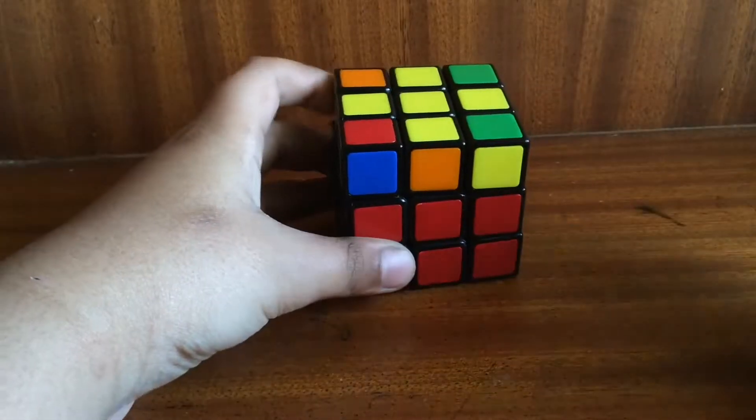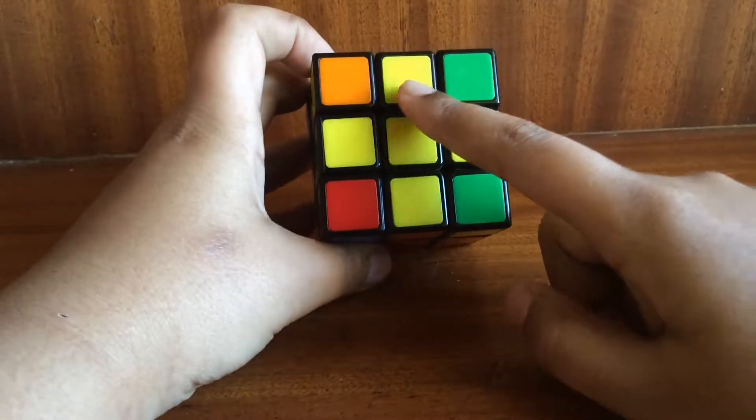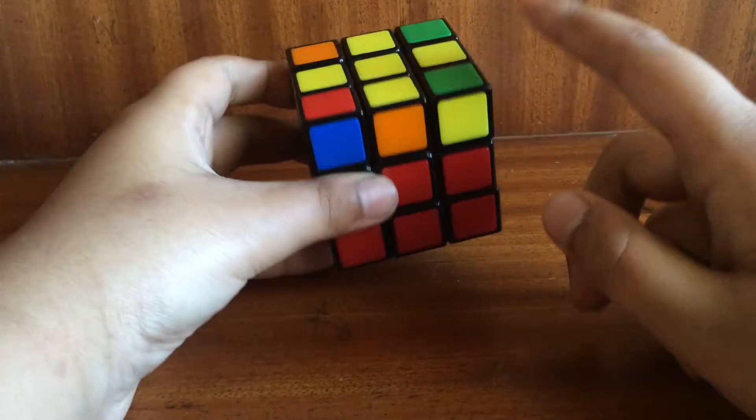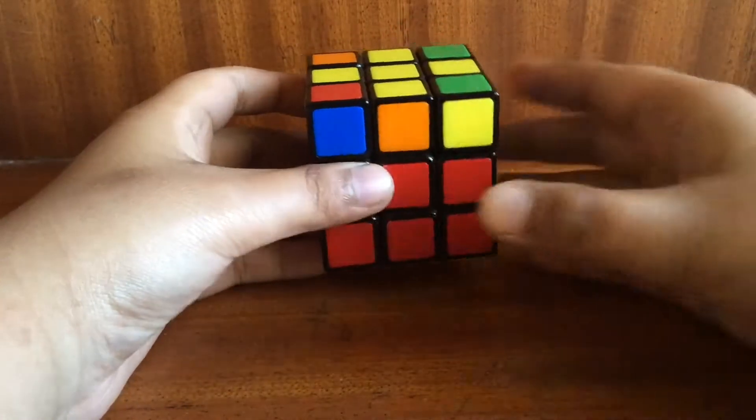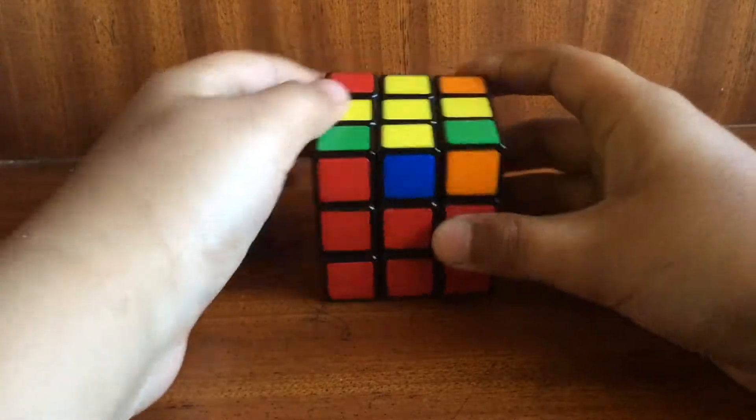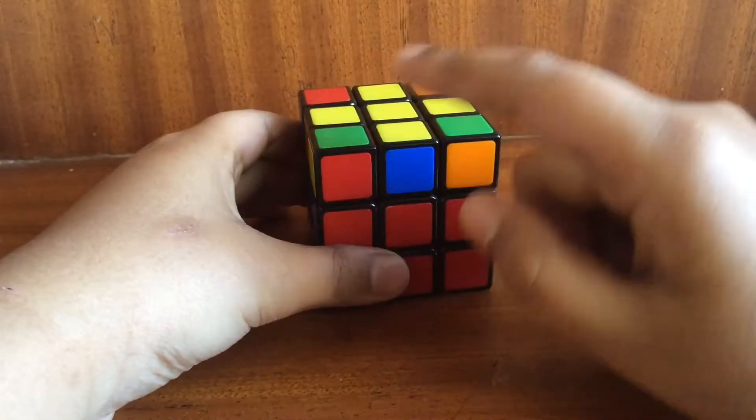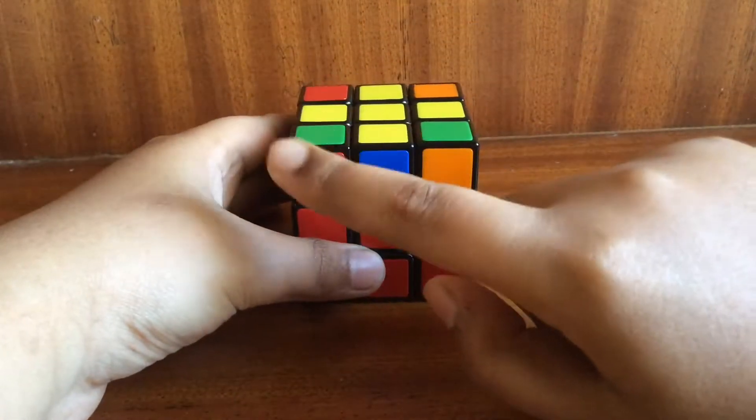Your cube must be in one of these situations where there is a yellow cross with a yellow piece over a yellow corner piece. So put it like this so that a yellow corner piece is on the left side.